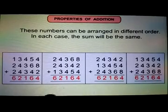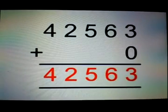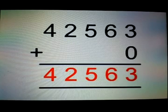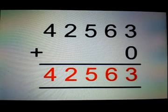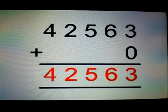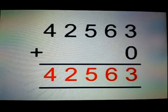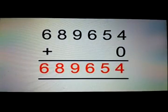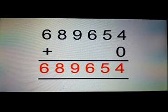The next property: the sum of a number and zero is the number itself. Just see the example — when you add 42,553 plus zero, you get the same number. Similarly, 66 lakh 89 thousand 6 hundred 54 plus zero gives the same answer.